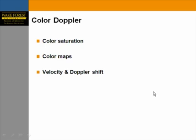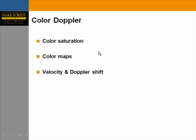Color Doppler implies color saturations, color maps, velocity, and the Doppler shift. We're not going to get into the physics details, but understanding the basic principles is important for the purposes of this lecture.